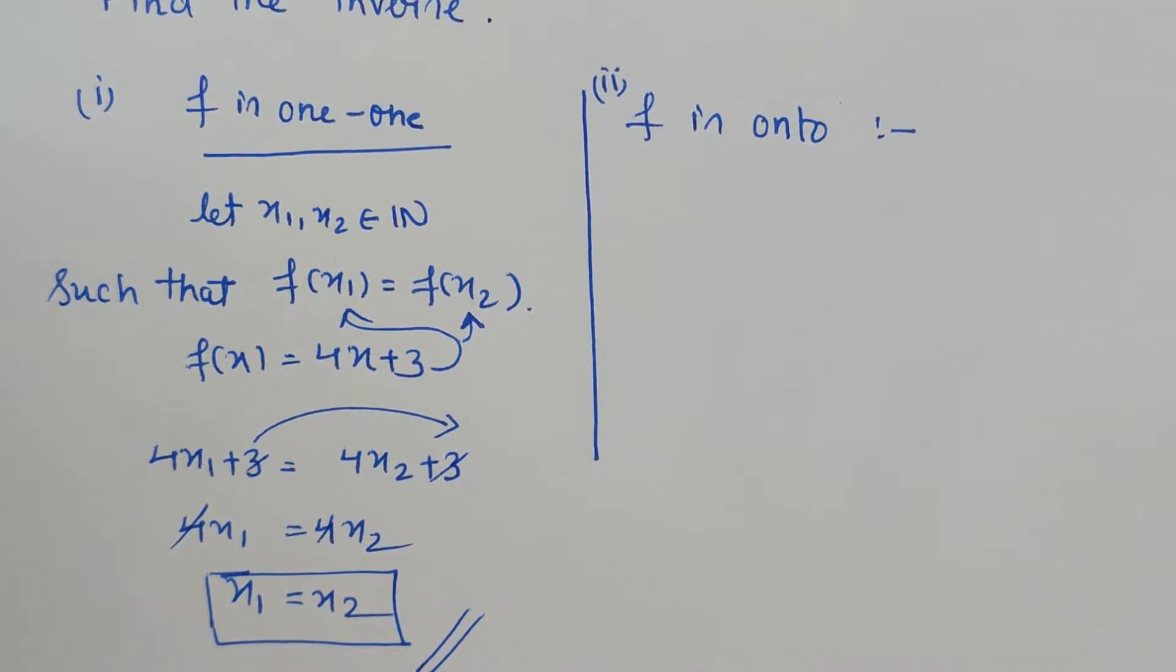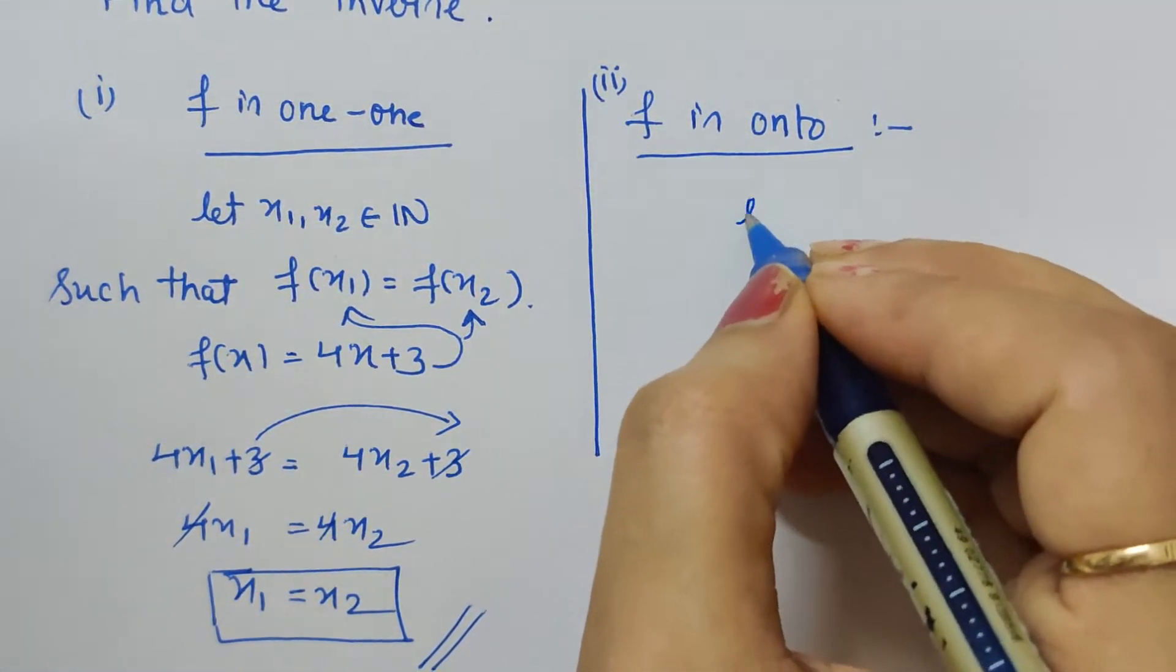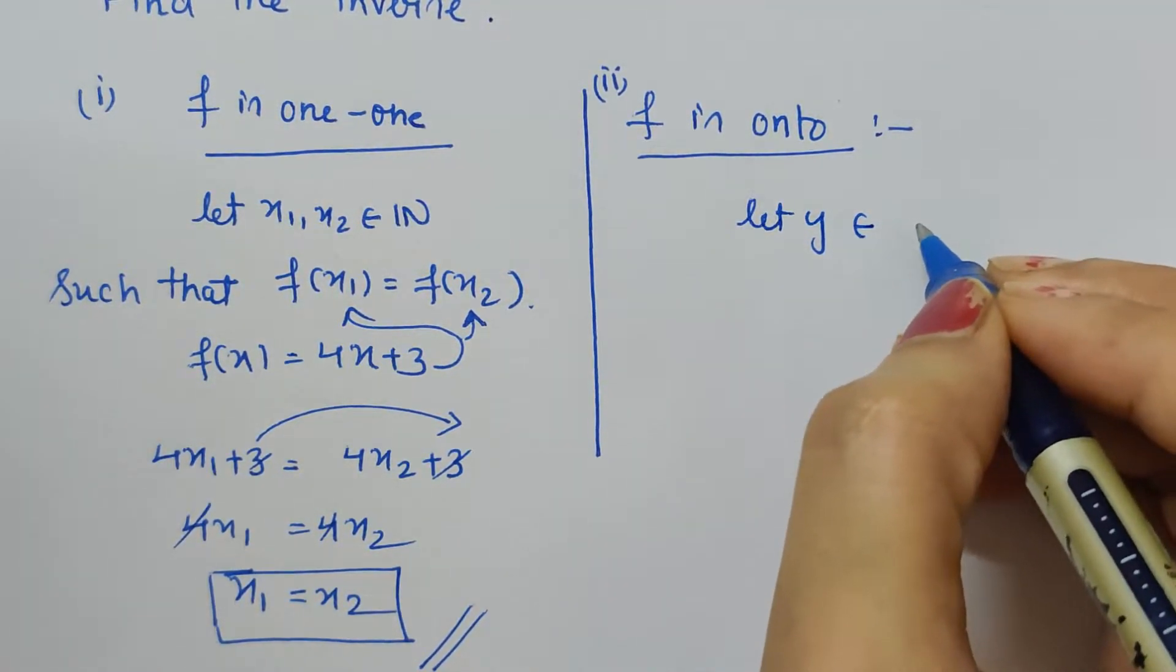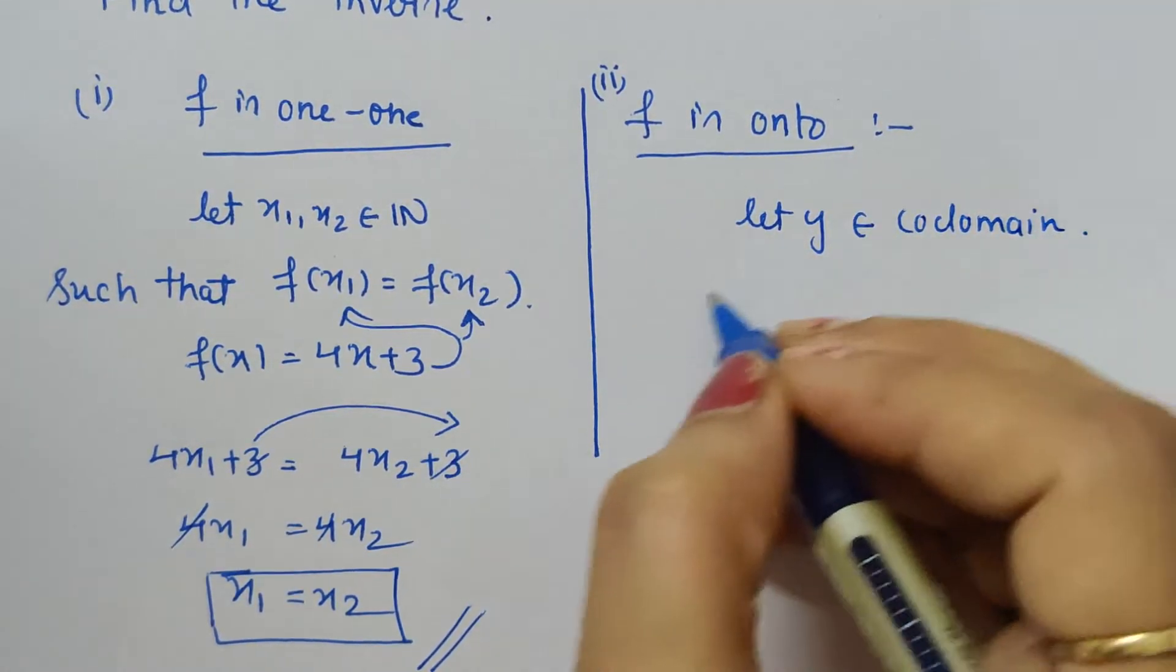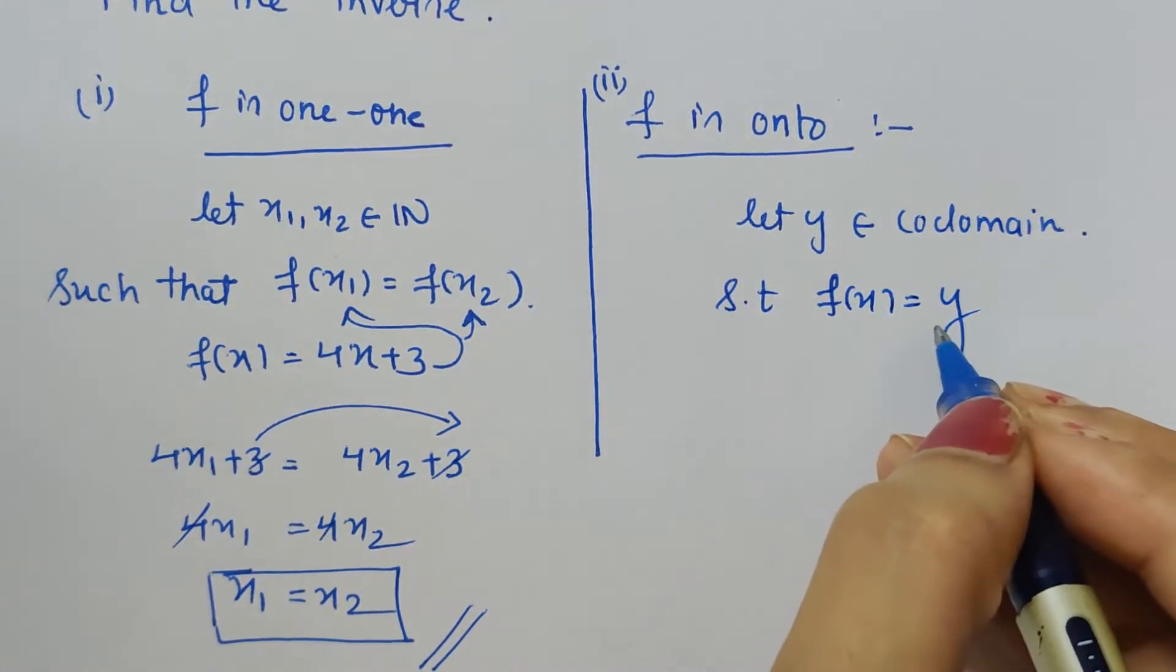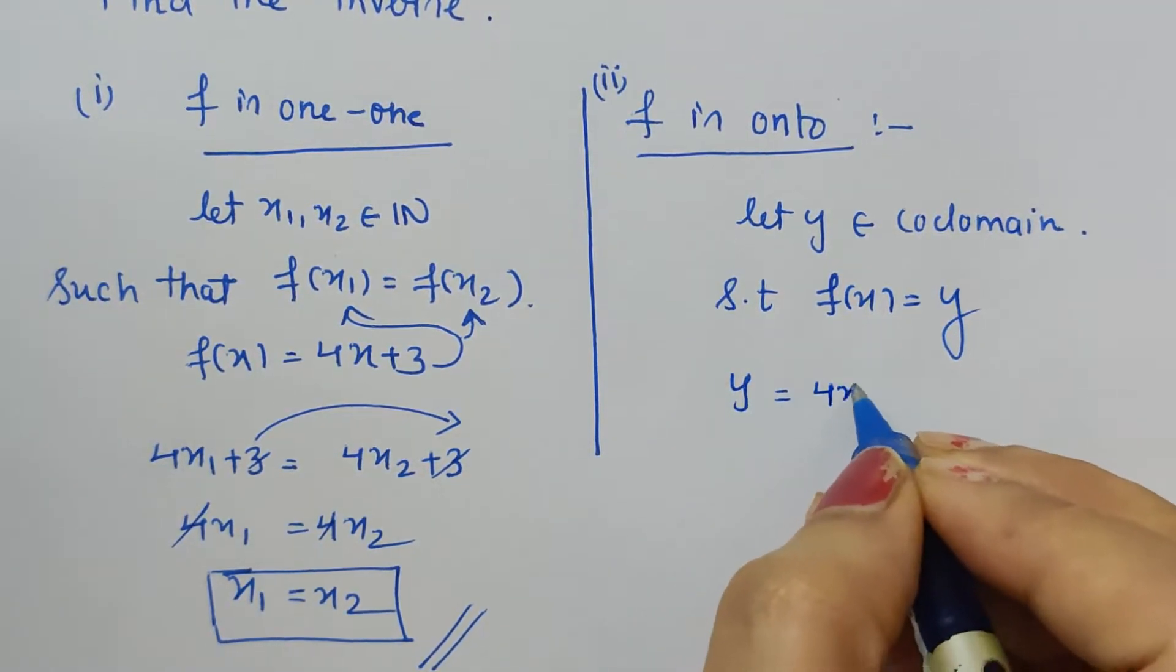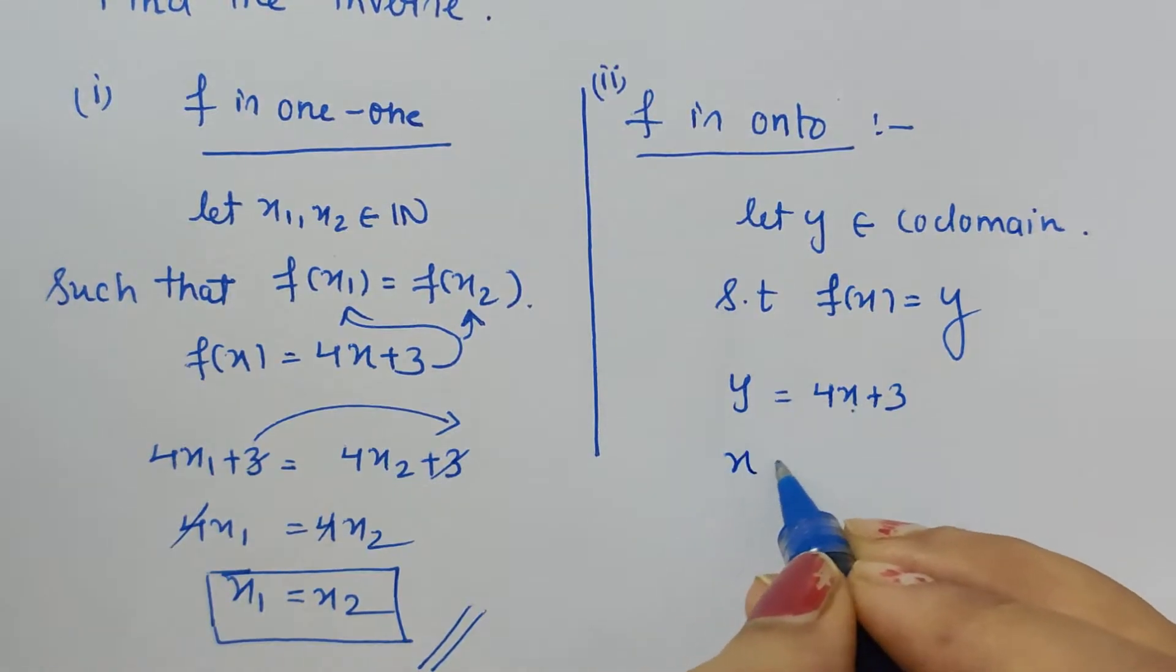For this we have to assume an element from codomain, so let y belong to codomain such that f(x) is equal to y. This we have to show. So now what is y given to us? It is 4x plus 3. Now we will write x in the form of y, so it can be written as x is equal to (y minus 3) upon 4.